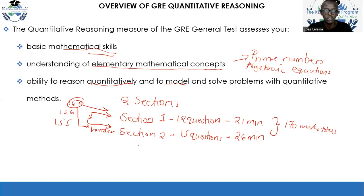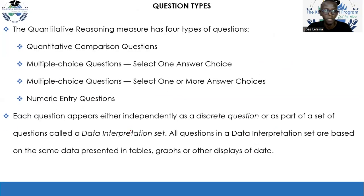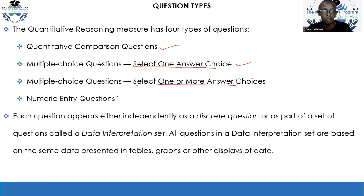The GRE quantitative reasoning measure has four types of questions. The first type is the quantitative comparison question. Second, you have multiple choice where you are asked to select one answer only. Third, you have multiple choice questions where you are asked to select one or more answers — maybe one, maybe two will be correct. Finally, the fourth type is the numeric entry question, where you're given a box and asked to fill it in.